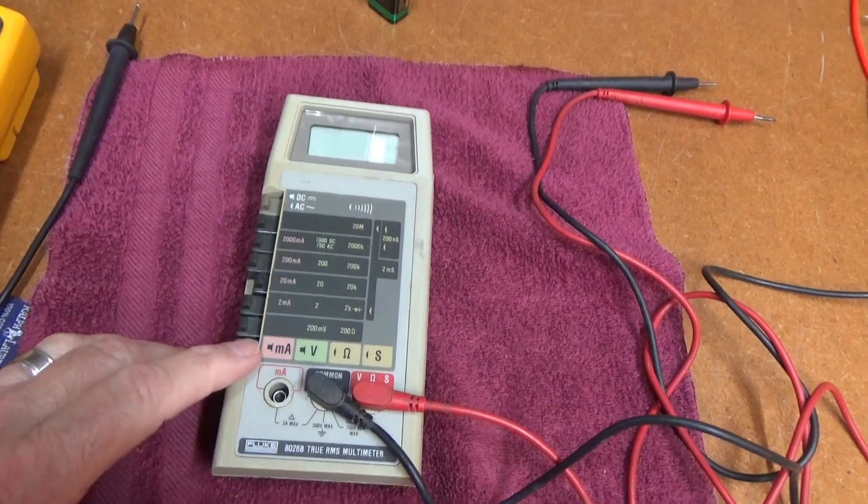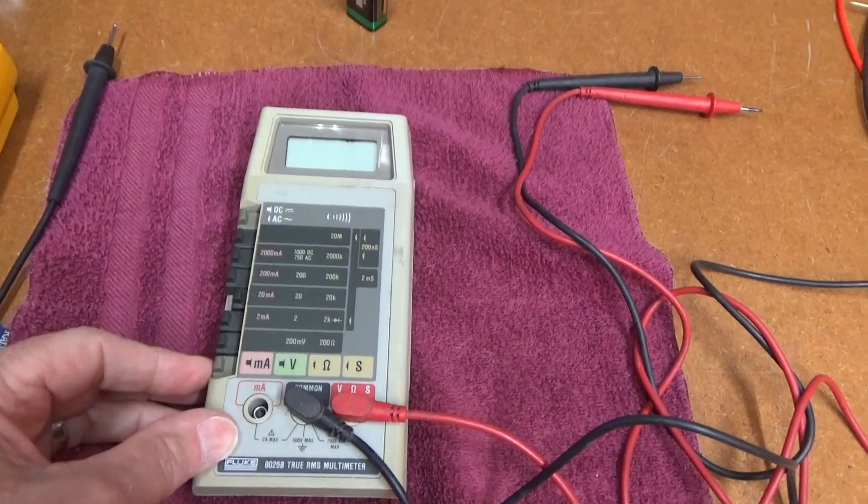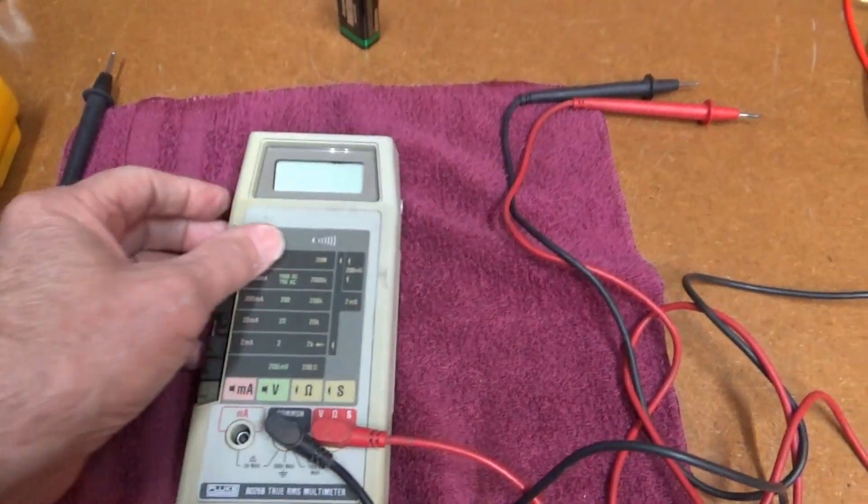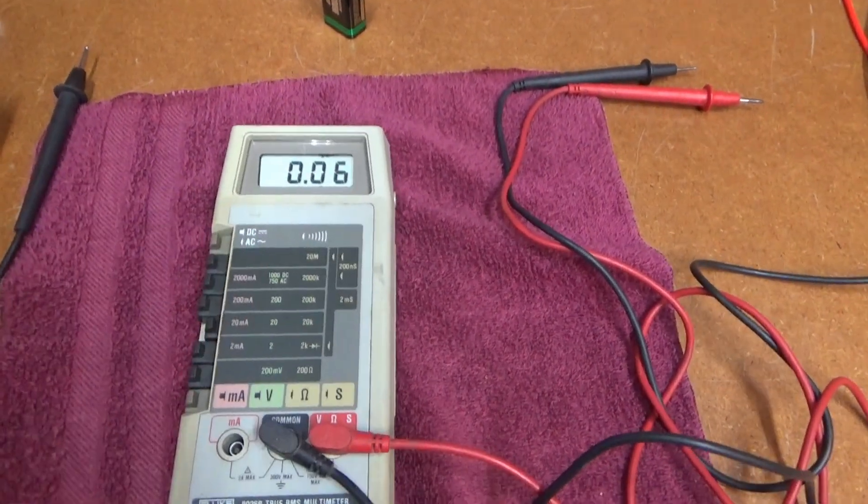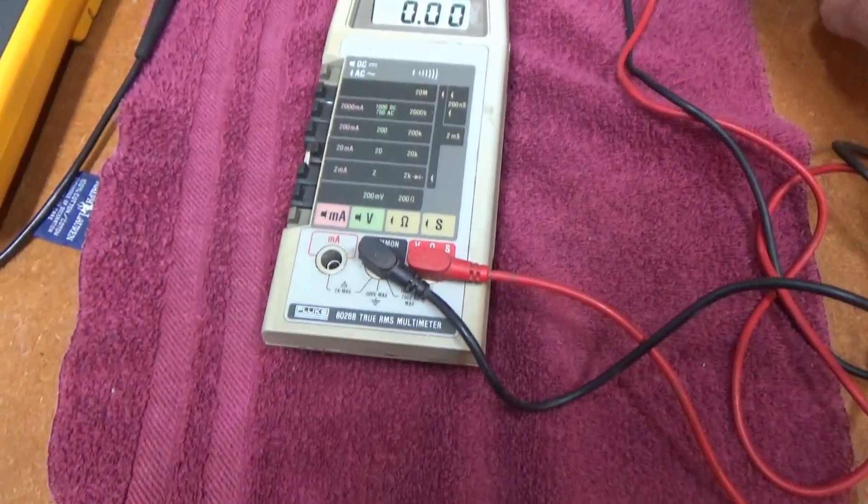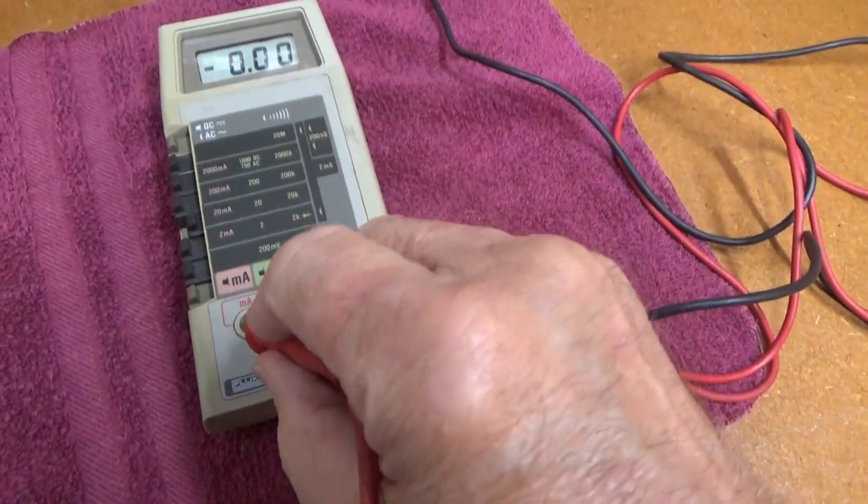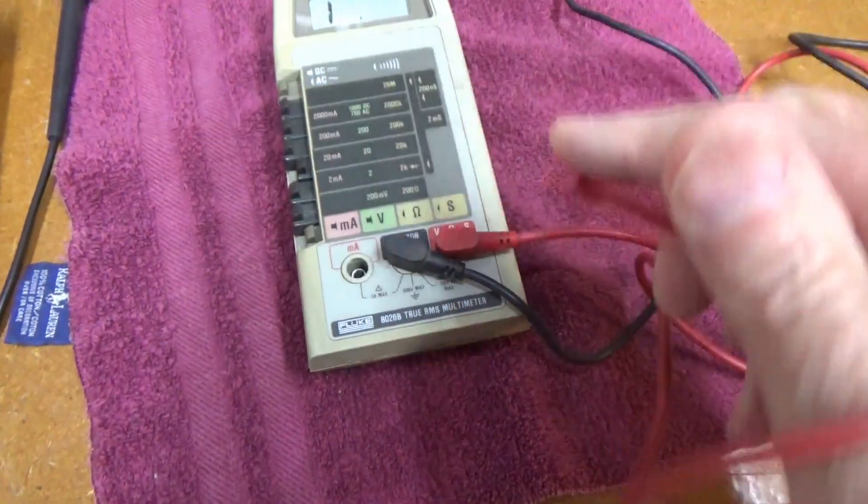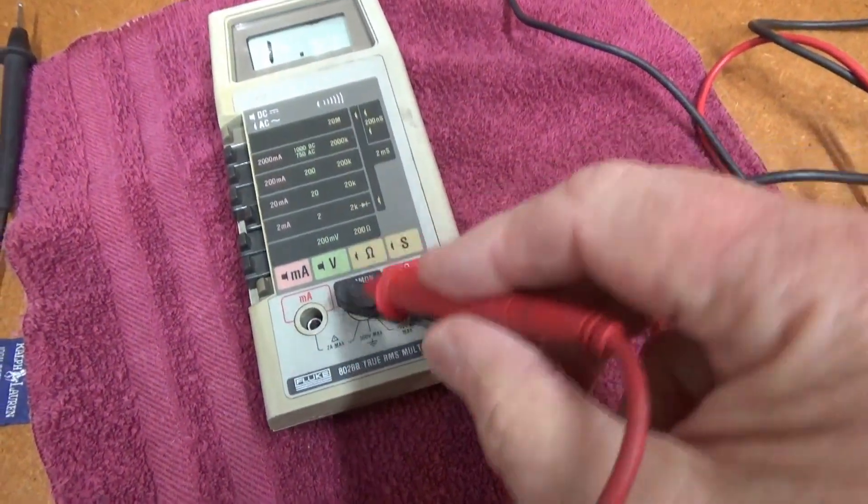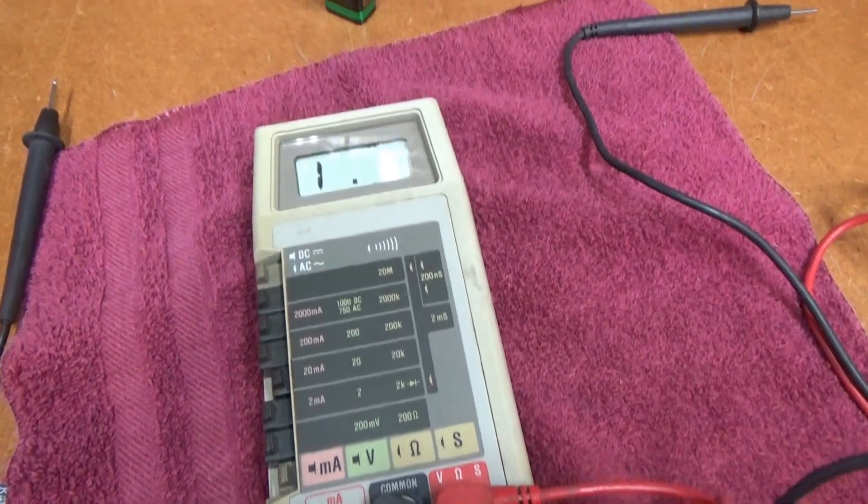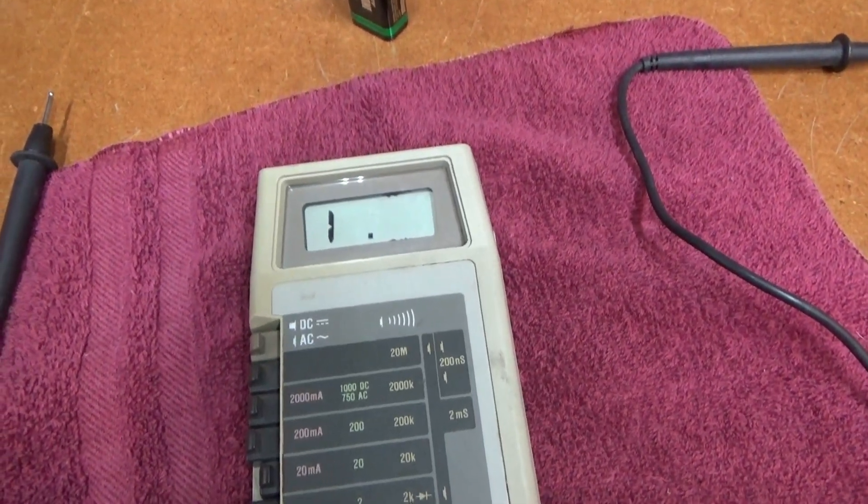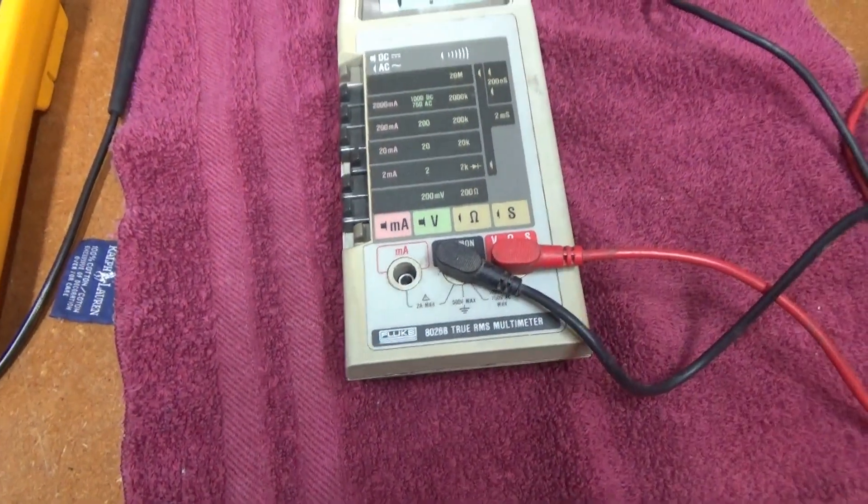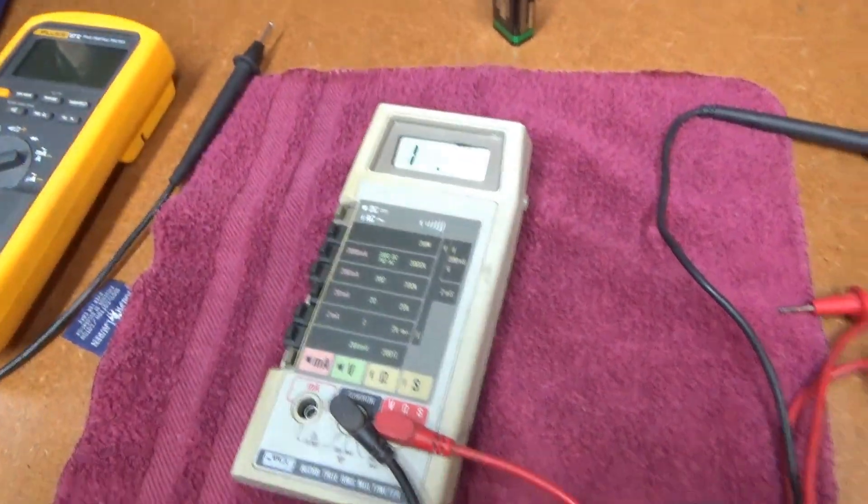The only thing that's not working right now is the milliamp range. Here's a good way to test these: hook up the meter, take the positive and hook it up trying to measure ohms. That should measure the resistance of the fuse, and it's calling it infinite. So that fuse is probably either missing or broken.